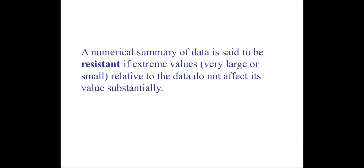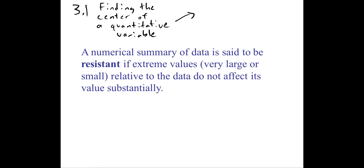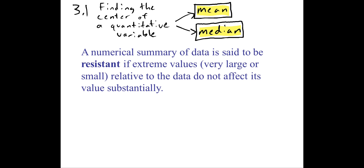In section 3.1 we talked about how to find the middle of a quantitative variable, and we looked at two ways to do that. One was the mean, which is just the average, and the other was the median, which is the geographic middle. You might wonder why we have two different methods to figure out where the middle of a group of numbers is. Since these are calculated by two different methods, sometimes the mean is more appropriate and sometimes the median is more appropriate. To determine why one might be better than the other, we're going to introduce the concept of what we call being resistant.